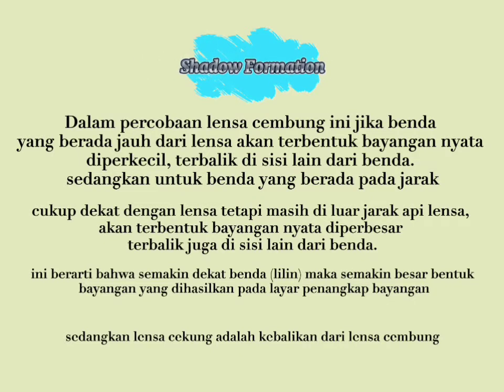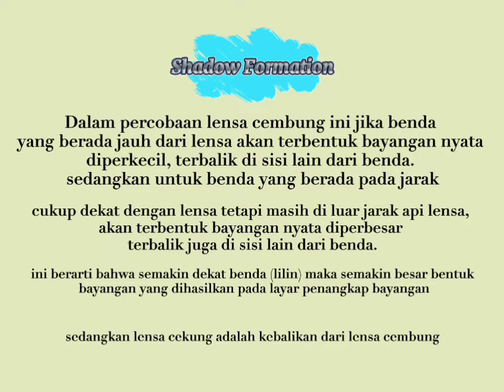In this convex lens experiment, if an object is far from the lens, it will form a reduced, inverted real image on the other side of the object. Whereas for objects that are close enough to the lens but still outside the focal distance, a real image is enlarged and upside down on the other side of the object.